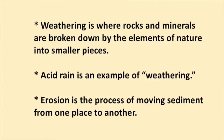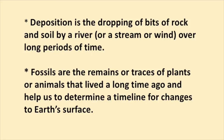Weathering is where rocks and minerals are broken down by the elements of nature into smaller pieces. Acid rain is an example of weathering. Erosion is the process of moving sediment from one place to another. Deposition is the dropping of bits of rock and soil by a river or a stream, wind, or a glacier over long periods of time. Fossils are the remains or traces of plants or animals that lived a long time ago and help us to determine a timeline for changes to Earth's surface.